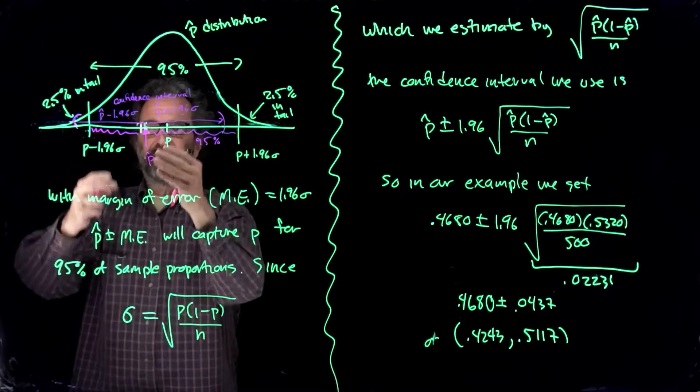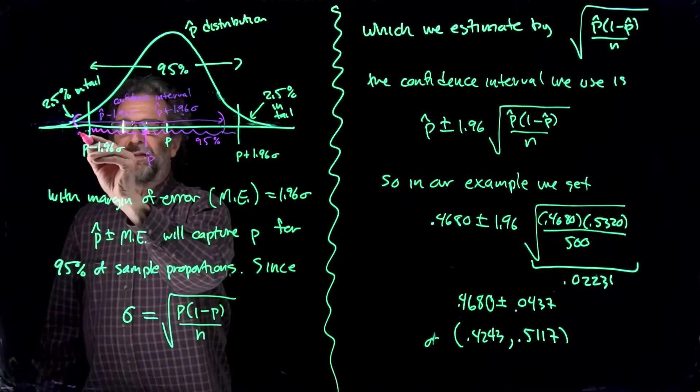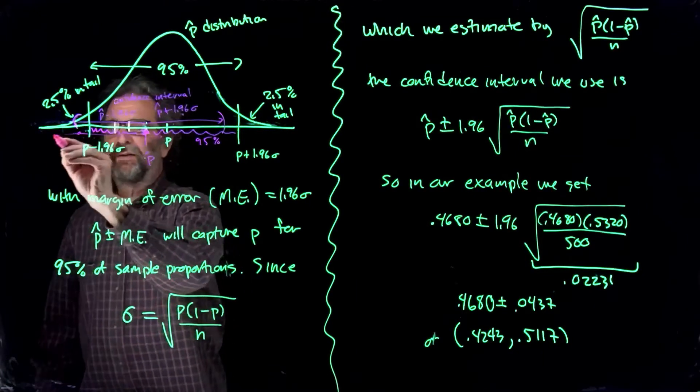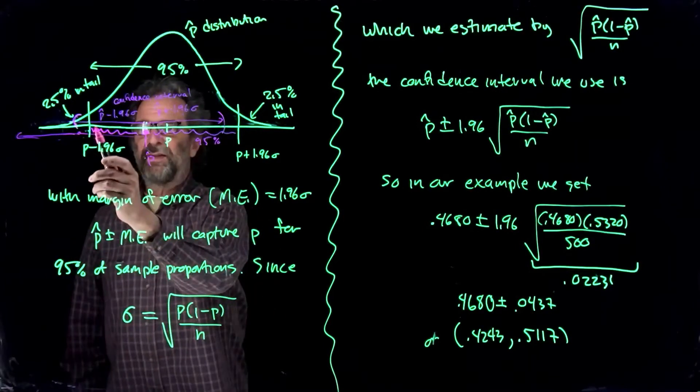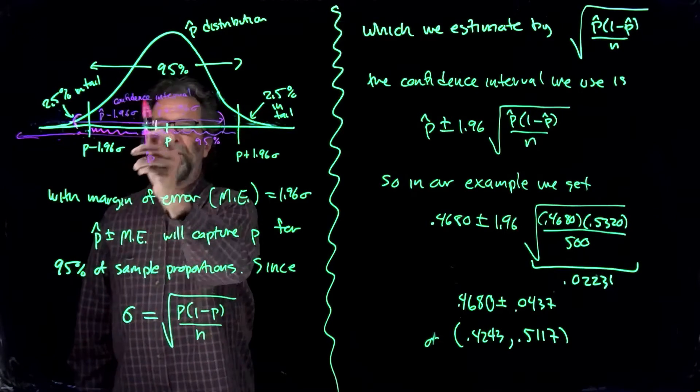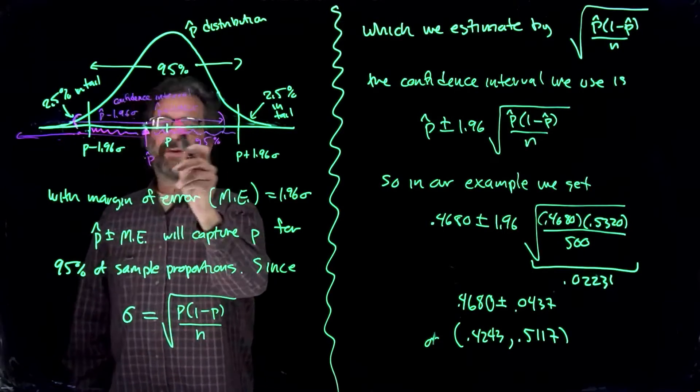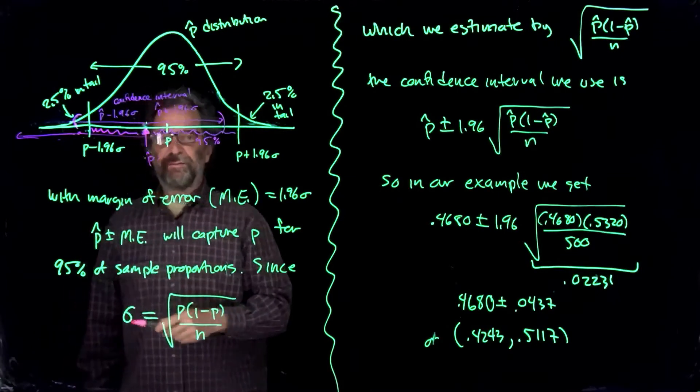Once I cross over here, we would miss it. So if we had picked a p hat out here and then gone that same distance on each side, we don't quite make it. But if we pick a p hat that's in this plus or minus 1.96 distance away from p, which is 95% of the p hats, when I go plus or minus that distance, one side or the other is going to capture the true value of p.